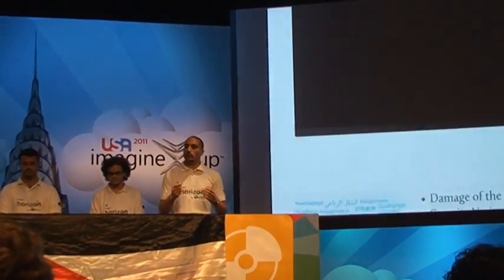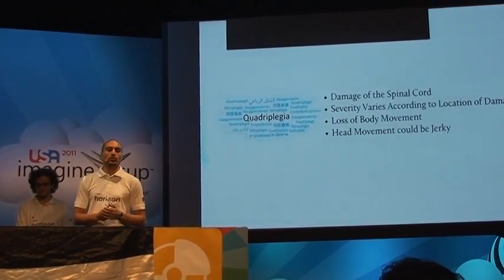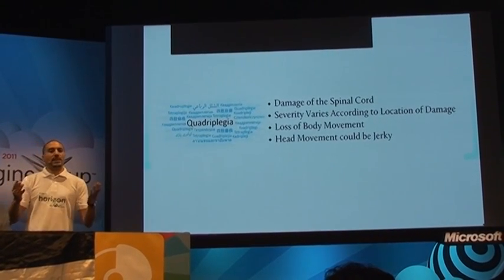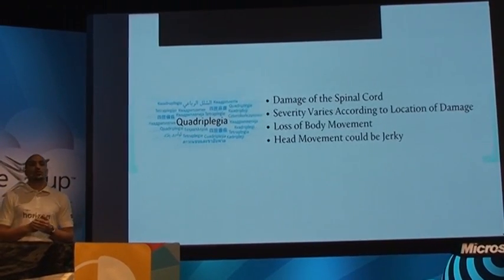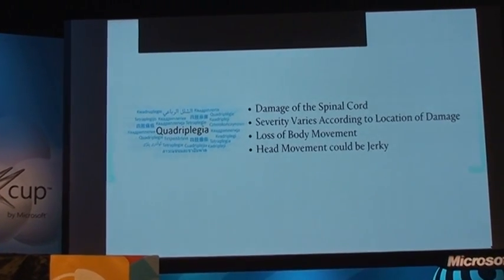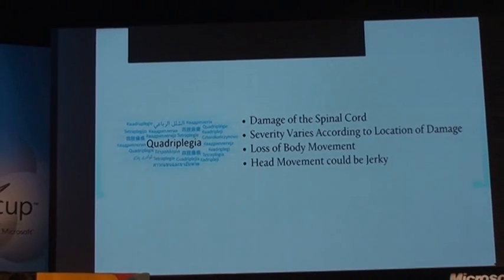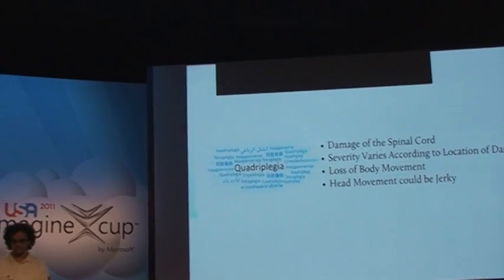The problem we're addressing is quadriplegia, paralysis in general, and loss of limbs as well. Damage to the spinal cord could cause a person to go into a quadriplegic state if it was high up in the vertebrae. Sometimes there is loss of body movement, and head movement can also be jerky at times — something we need to keep in mind.